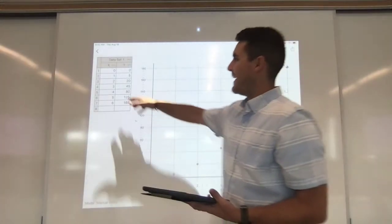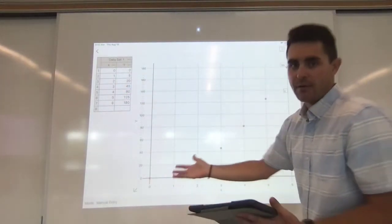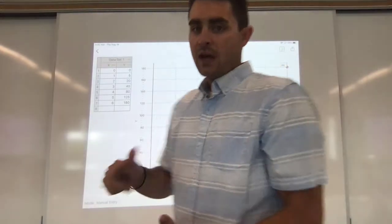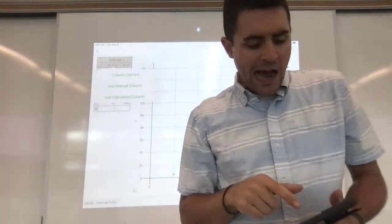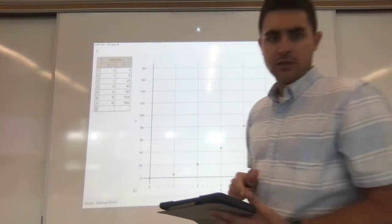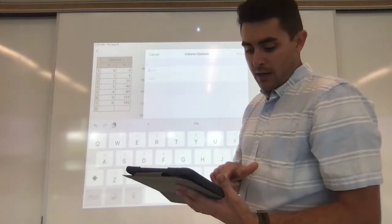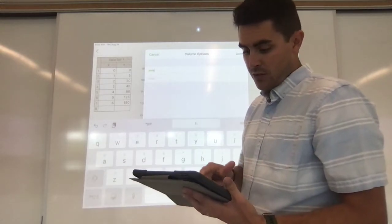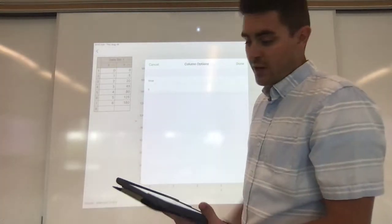So right now I've got x variables and y variables. It's called data set one. It graphs x and y. My points are plotted. But I can make this a little fancier. If I go ahead and click the three buttons next to x on my iPad and go to column options, what I can actually do is change the name from x to time. So I'm going to go ahead and do that and I'm going to put the units of time which is seconds. So now when I hit done,